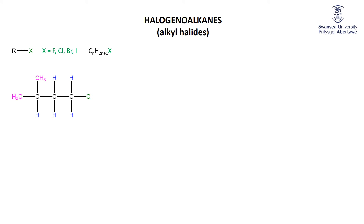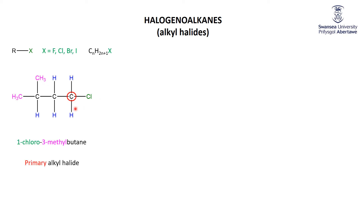Let's have a look at a few examples to point out some things about the naming. Halogens are treated just like alkyl branches. So where you would have had a methyl group, here we've got a chloro group, making this 1-chloro-3-methylbutane. There's no difference in priority for the numbering scheme between a halogen and an alkyl branch. This is a primary alkyl halide, because the carbon to which the chlorine is attached is only connected to one other carbon.